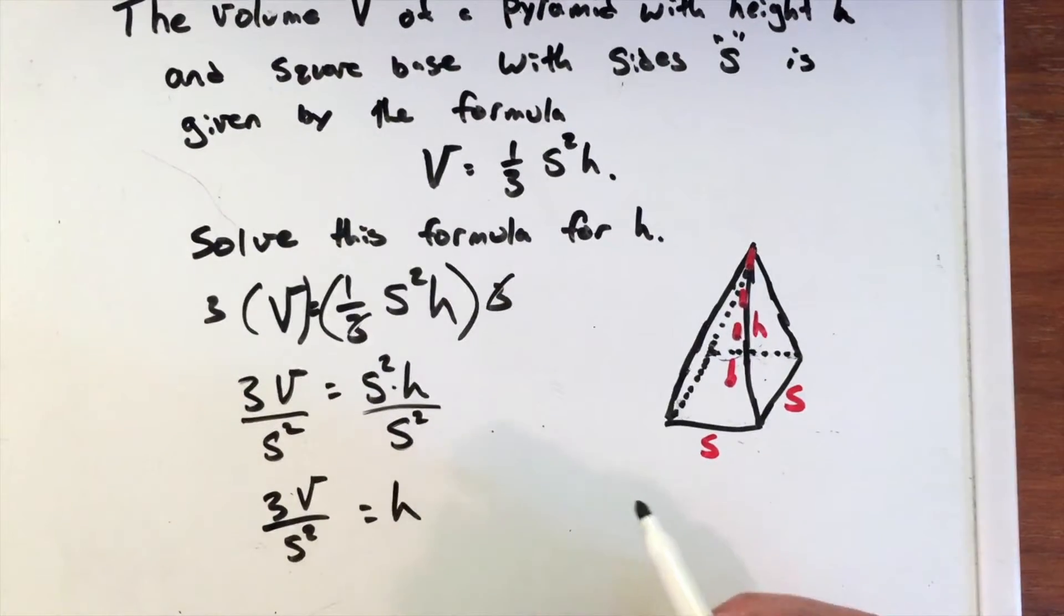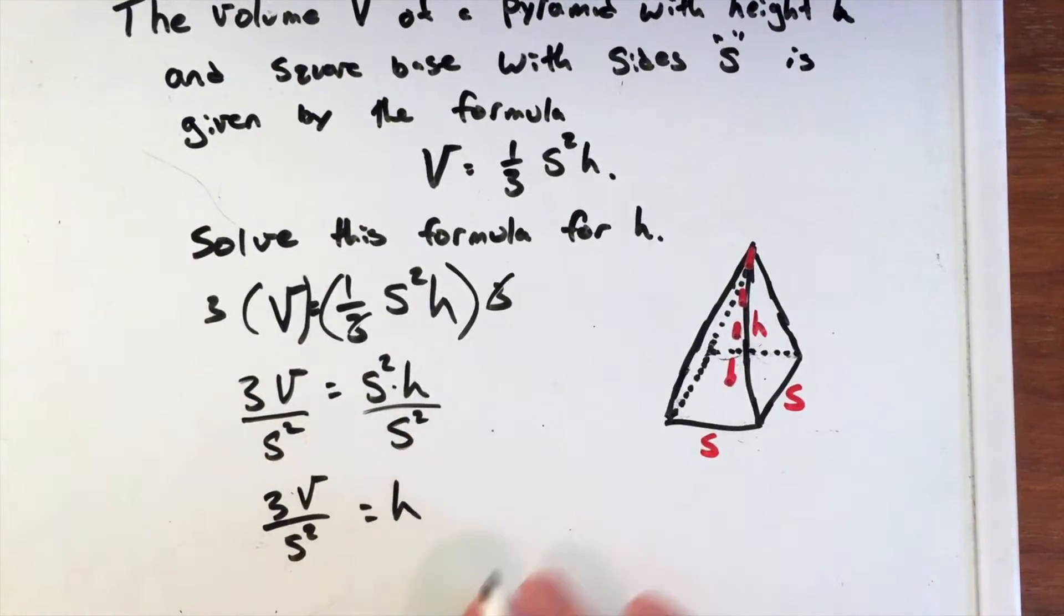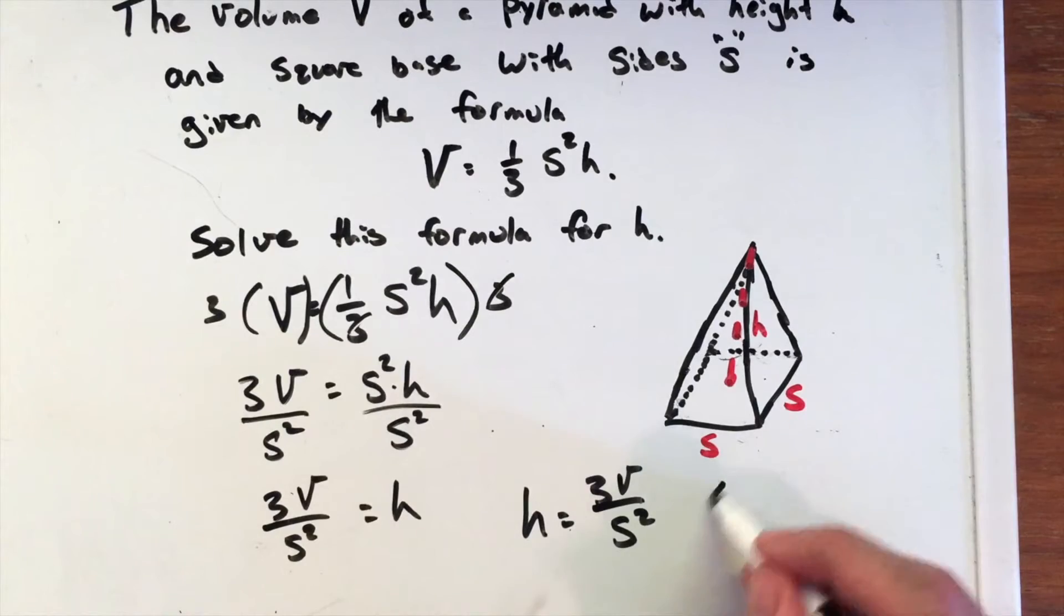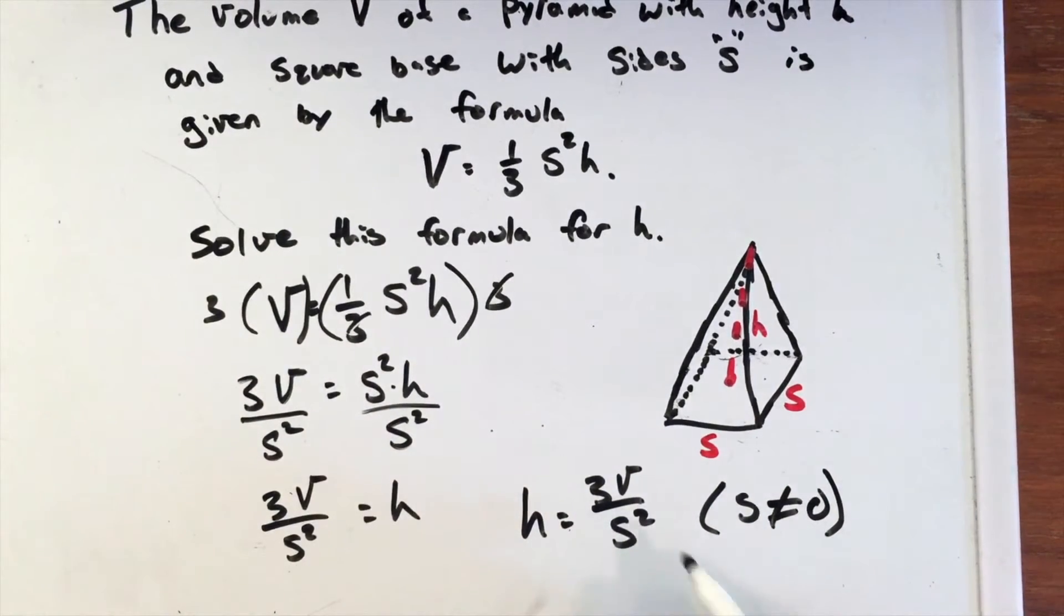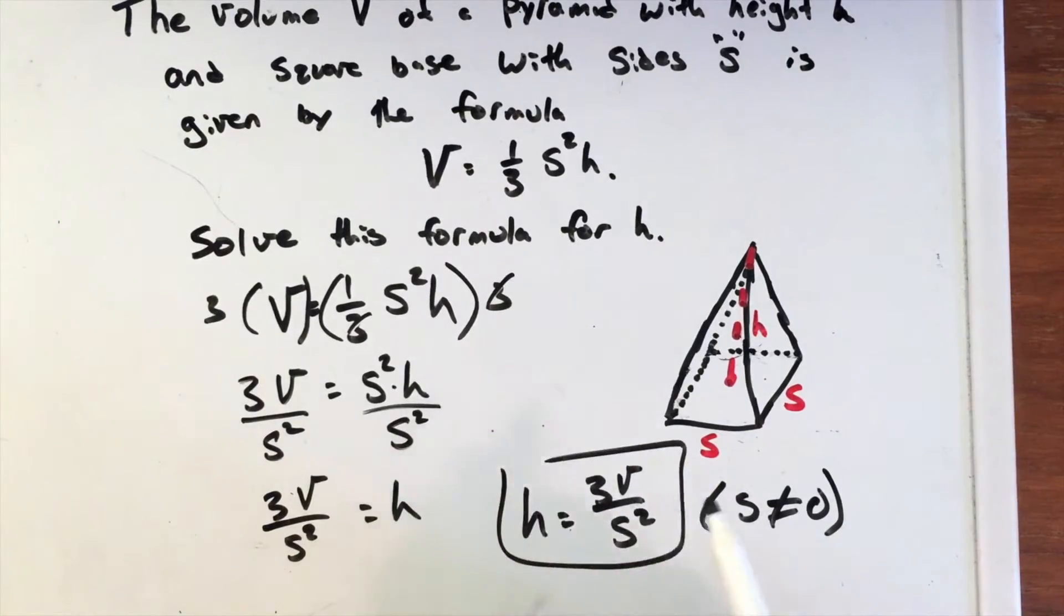So our final answer in terms of h is h = 3V/s², and we have to assume that s is not equal to zero because we cannot divide by zero. So there's our final answer.